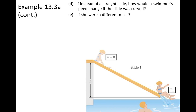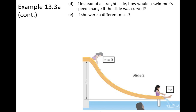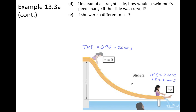Continuing with the same example — how would the swimmer's speed change if the slide was curved instead of straight? The important idea in conservation of energy is that what happens between the initial spot at the top of the slide and the bottom doesn't really matter. It just matters what type of energy we start with. We started with total mechanical energy of 2000 joules — all gravitational potential — and those 2000 joules remained. So the total mechanical energy is still 2000 joules, but now all of it is kinetic. Nothing about the energy statements changed by changing the shape.